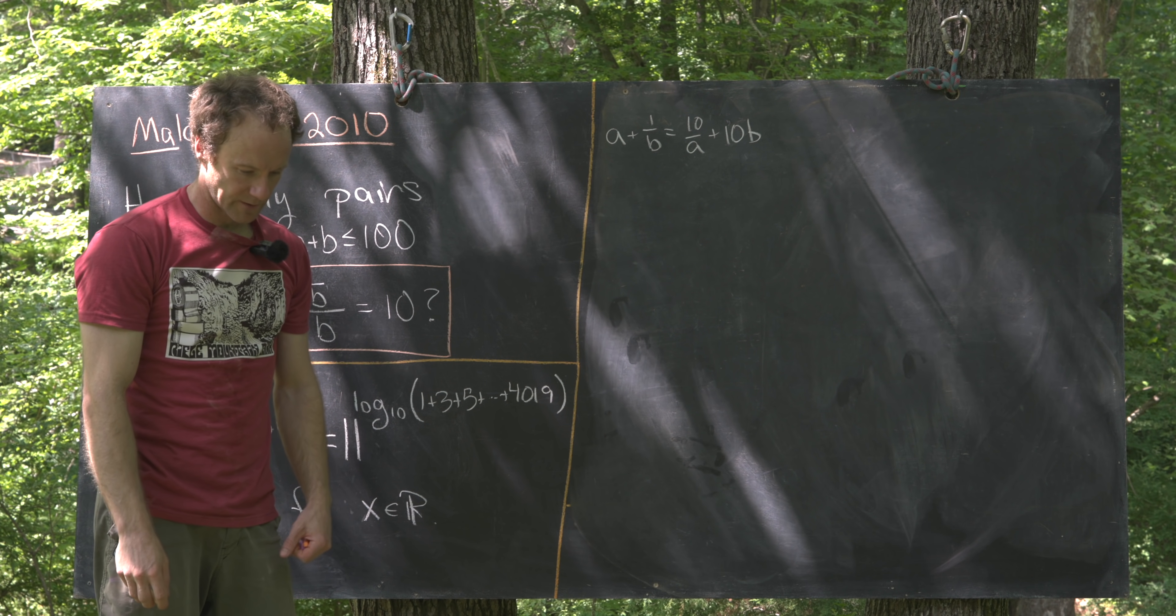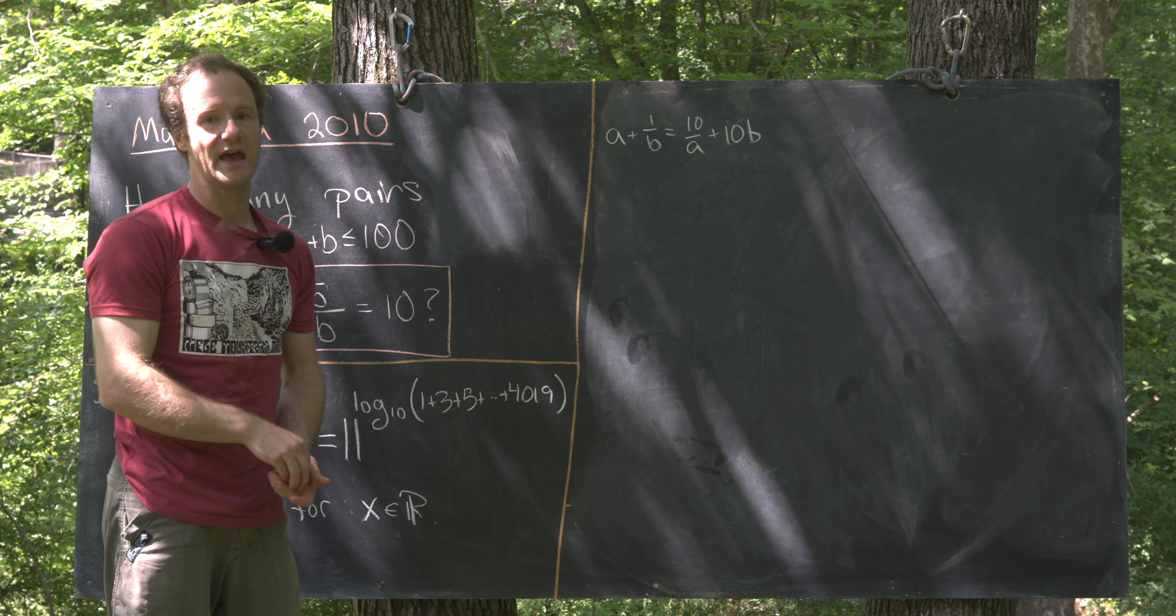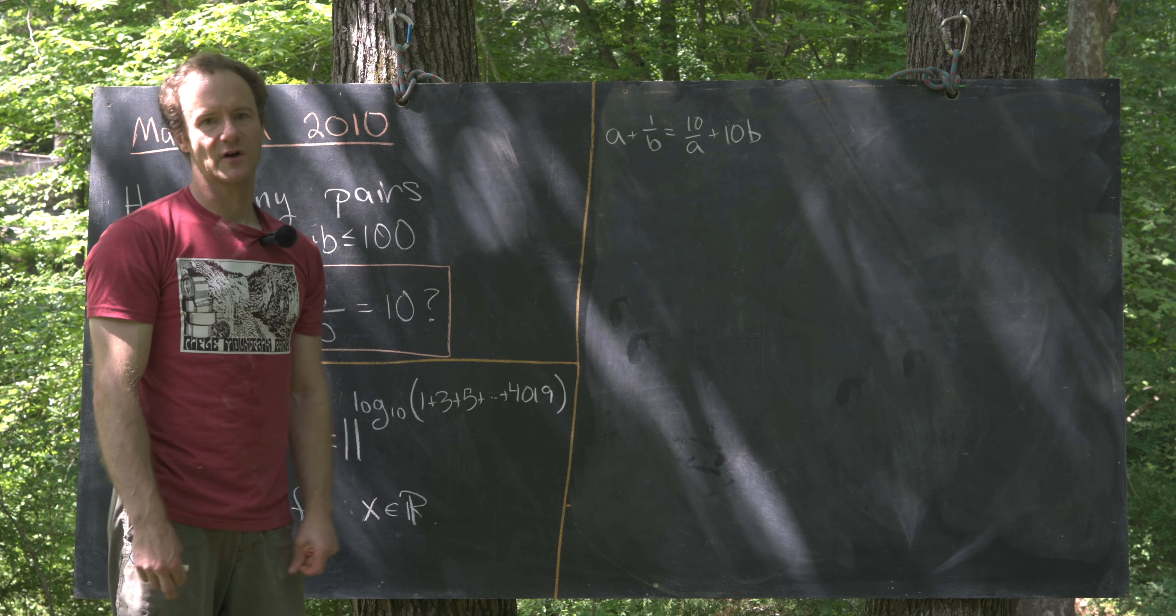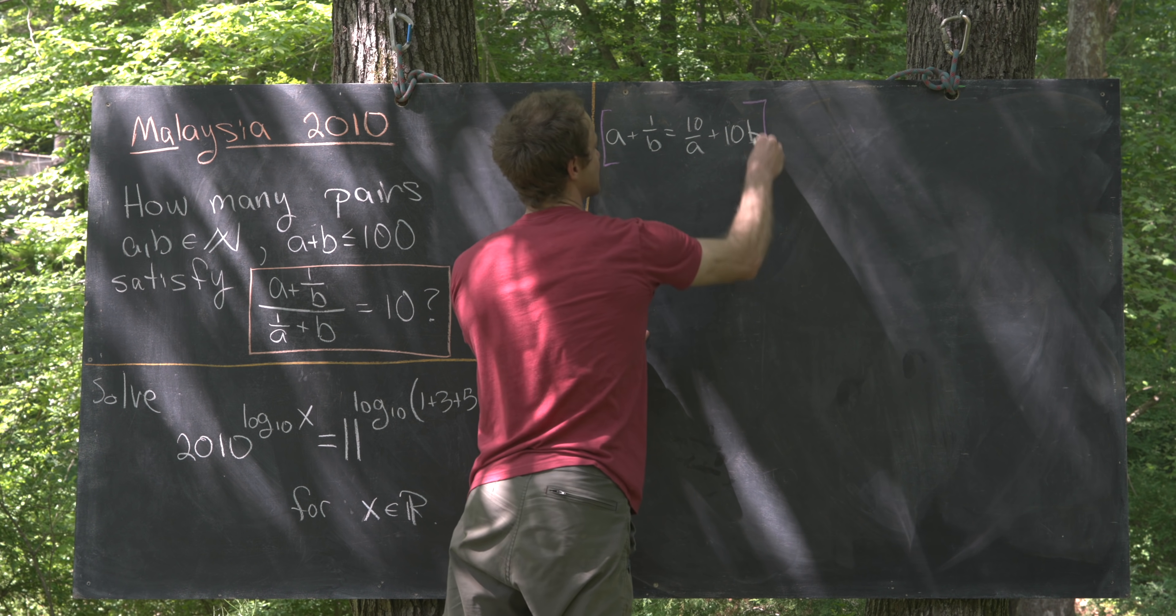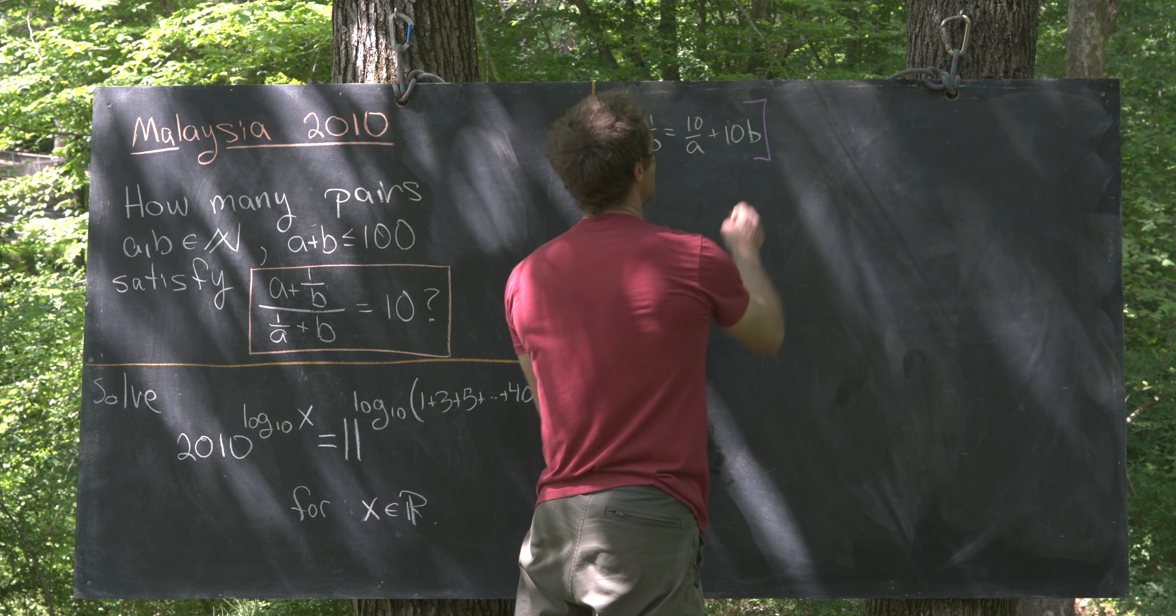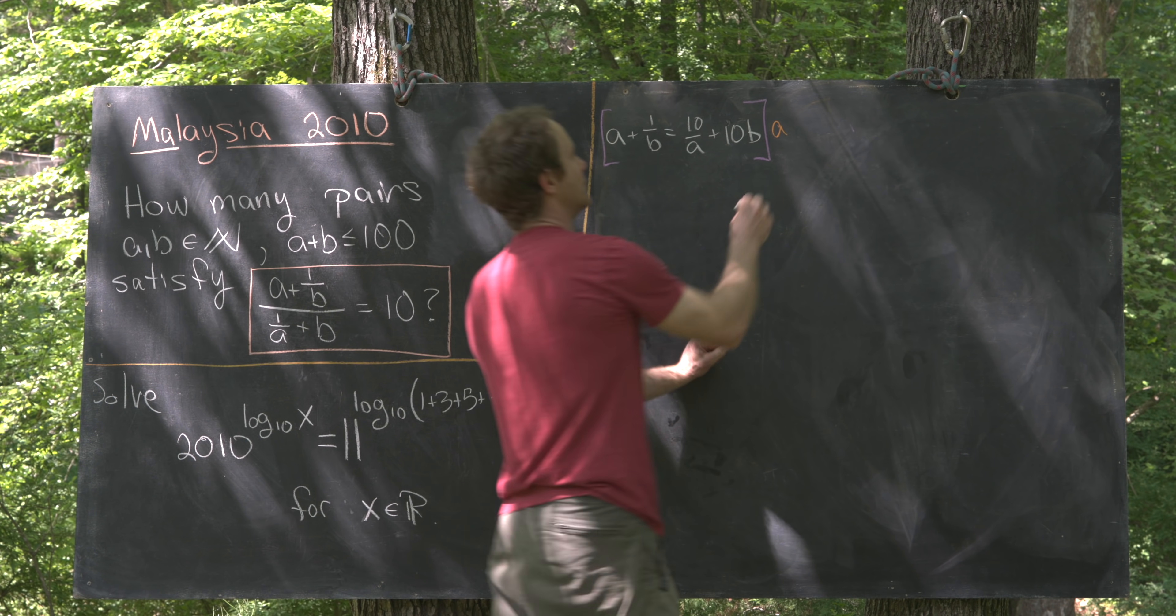We've got two things that we could do here. We could maybe solve for A in terms of B or B in terms of A, and I think the level of difficulty will be about the same. But I'm going to solve for A in terms of B, which means I want to translate this from some sort of rational equation in A to a quadratic equation in A. And I can do that by multiplying this entire equation by A.